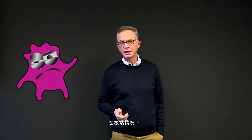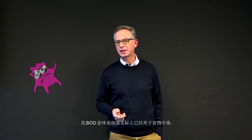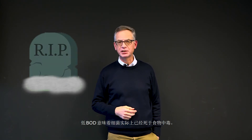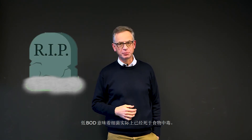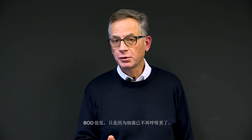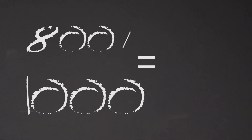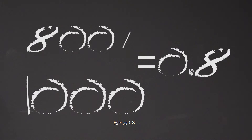In extreme cases, a low BOD means that the bacteria have actually died from food poisoning — the BOD value is low simply because the bacteria no longer breathe. In the opposite case, at a ratio of 0.8, we see that the bacteria have been able to handle 80% of the food offered to them without feeling bad.